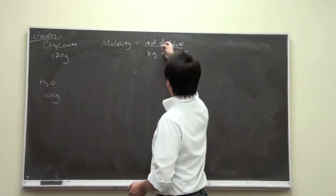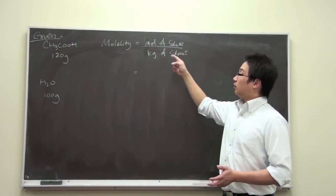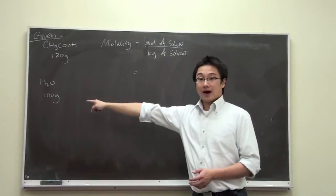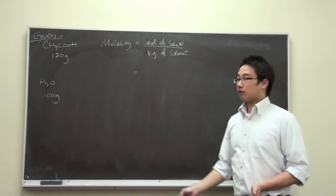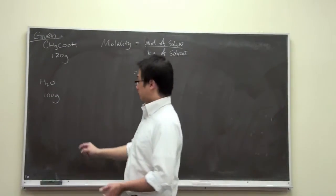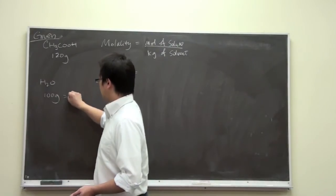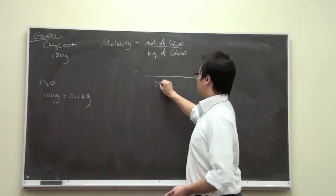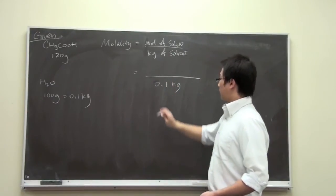We have to find out what is the number of moles of acetic acid and then we have to convert that number, 100 grams, to kilograms. Now, this one is simple. 100 grams is equal to 0.1 kilogram. So we have this number already.